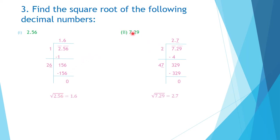Question number 2: 7.29. First, group the numbers: the integer part has one digit forming one group, and the decimal part has two digits forming another group. Starting division: 7 is not a perfect square, but it lies between the squares 4 and 9. The smaller is 4, whose square root is 2. Write 2 in the quotient and divisor side. 2 twos are 4; 7 minus 4 equals 3. Copy down the next group 29, making the new number 329.